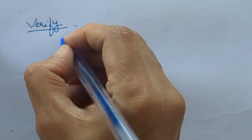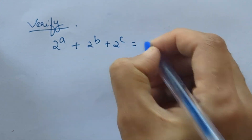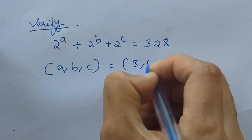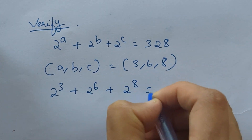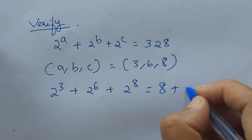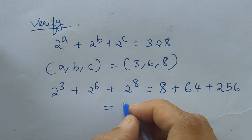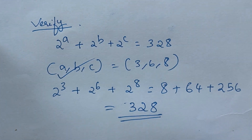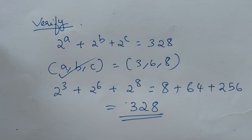Let's verify our answer. The question was 2 raised to A plus 2 raised to B plus 2 raised to C equal to 328, and we got A equals 3, B equals 6, C equals 8. So that is 2 cubed plus 2 raised to 6 plus 2 raised to 8, which equals 8 plus 64 plus 256, equal to 328. We have verified our answer is correct. Thanks for watching and please don't forget to subscribe.